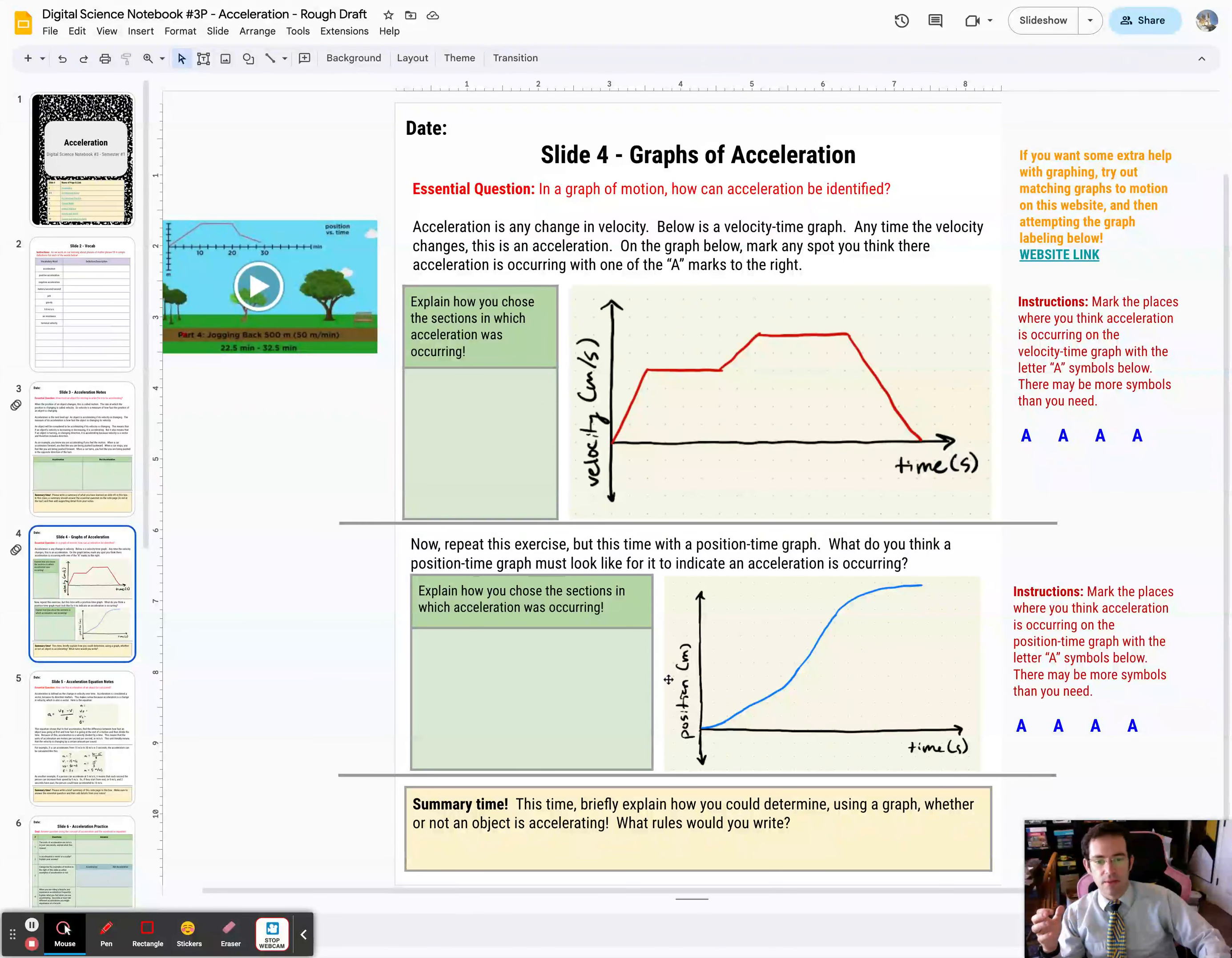Second one down. Now it's a position-time graph instead. So you need to find the place on that graph where the velocity is changing and therefore the object is accelerating. And again mark those with an A. As a small hint, these two graphs more or less go together.